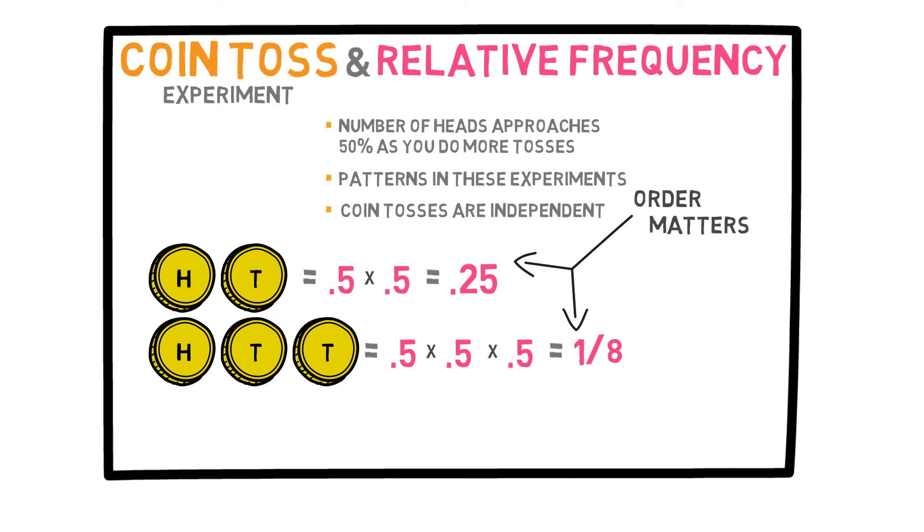But suppose I ask you what the probability of observing two heads and one tails in any order is. This would include heads, heads, tails, heads, tails, heads, and tails, heads, heads. In this case, I would add these three probabilities because these are three disjoint events. So, it would be 1 over 8 plus 1 over 8 plus 1 over 8, which of course equals 3 over 8.